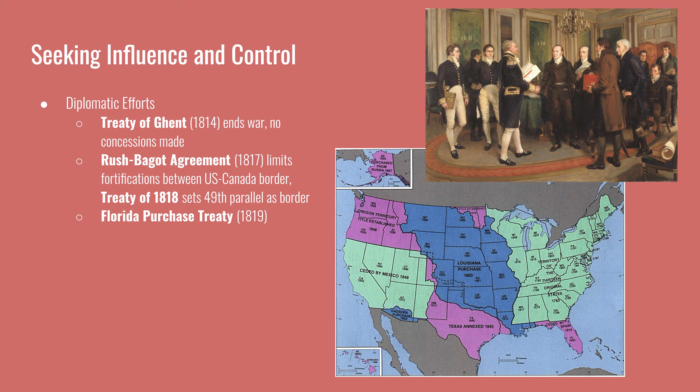For diplomatic efforts: the Treaty of Ghent ended the War of 1812, with John Quincy Adams as Secretary of State shaking hands with the British foreign minister — there was no territorial gain or loss by either side. The Rush-Bagot Agreement established limited fortifications along the U.S.-Canada border. The Treaty of 1818 set the 49th parallel as the border between the United States and British Canada west of the Minnesota Territory, and the U.S. gained a small amount of territory not part of the original Louisiana Purchase.